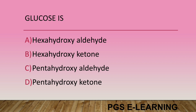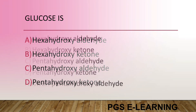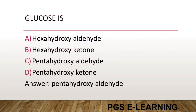Glucose is: Option A, hexahydroxy aldehyde. Option B, hexahydroxy ketone. Option C, pentahydroxy aldehyde. Option D, pentahydroxy ketone. Correct answer is pentahydroxy aldehyde.